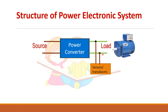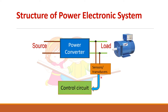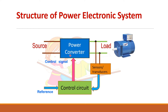I also have to measure the voltage, so I am using sensors to measure the parameters and give this information to a control circuit. I also have to give some input to the control circuit, which is called the reference speed — the speed at which I want to run the motor. This control circuit will do the calculation and generate a control signal to control the power converter, so the required amount of voltage will be delivered to the load and the motor will run at the reference speed.